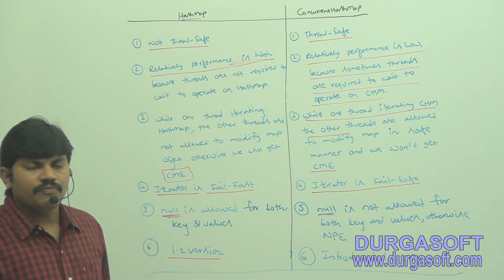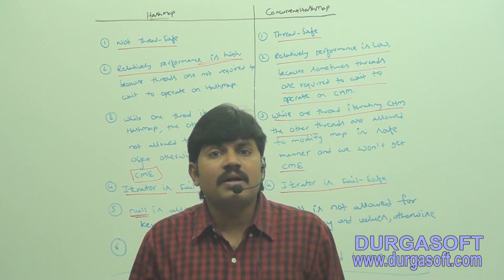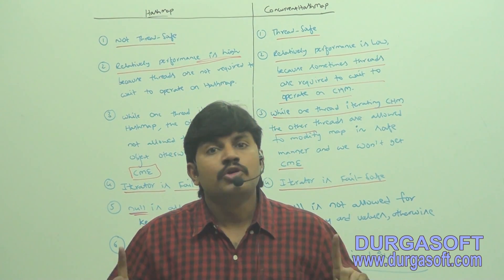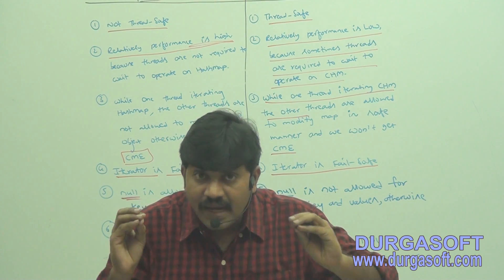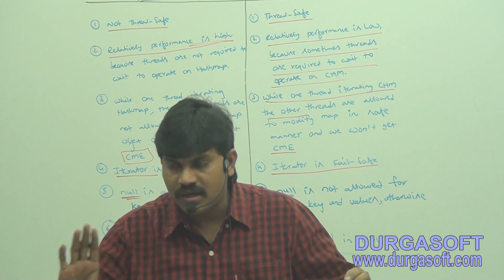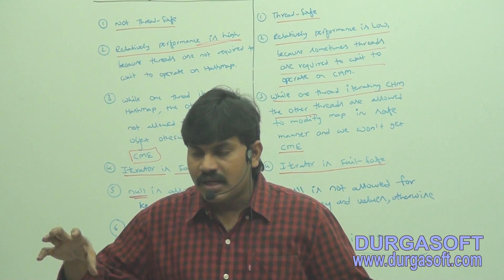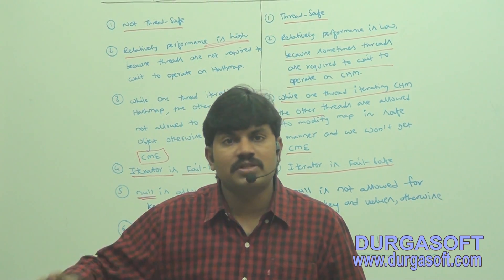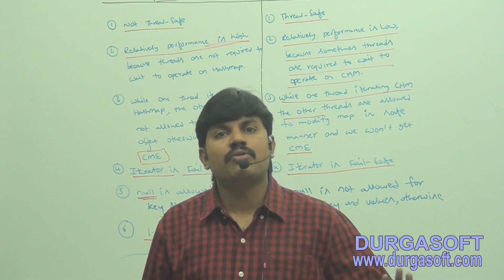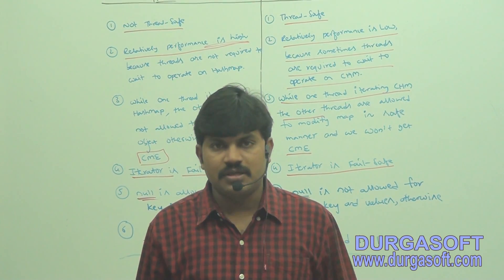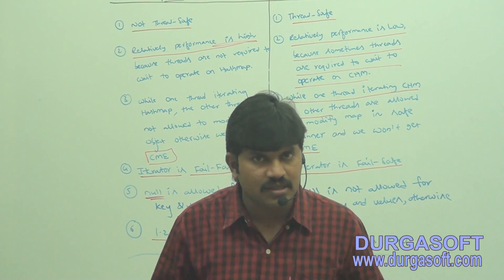If anyone asks about the difference between normal HashMap and ConcurrentHashMap, you should be able to tell all the differences. The main ones are: HashMap is not thread safe, ConcurrentHashMap is thread safe; HashMap raises ConcurrentModificationException, ConcurrentHashMap does not. You have to tell all the differences.